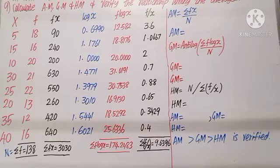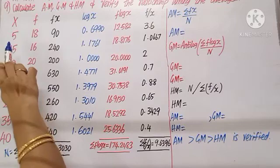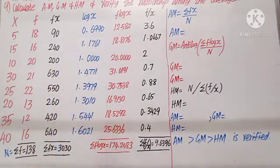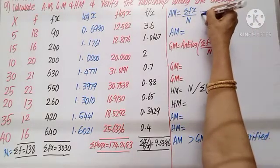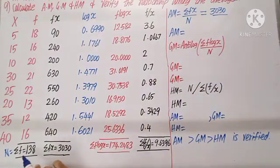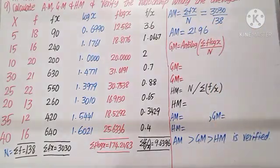Question number 9: Calculate the arithmetic mean, geometric mean, and harmonic mean, and verify the relationship among the averages. Given x and f, find f × x for each pair — 5×18=90, 15×16=240, 10×20=200, and so on. Total sigma(fx) = 3030, total frequency sigma f = 138. AM = sigma(fx) / n = 3030 / 138 = 21.96.